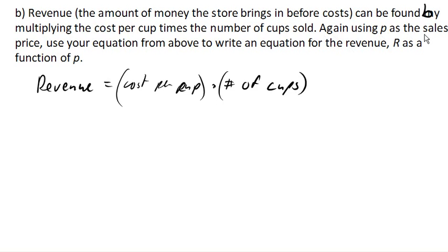So again, using P as the sales price, use our equation from above. Our equation from above was N of p equals negative 120p plus 650. To write an equation for revenue as a function of P. What is the cost per cup? Well, the cost per cup is P, it's the sales price.